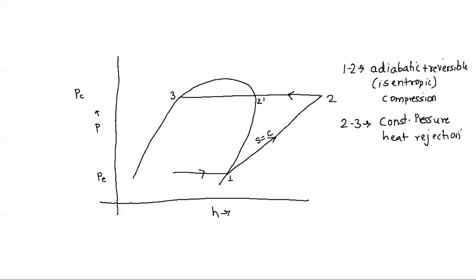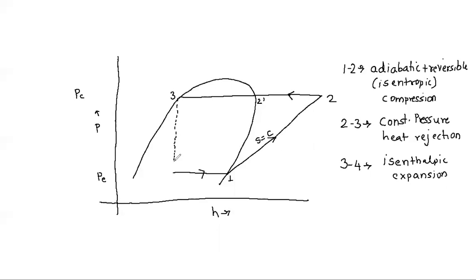After the condenser, the refrigerant goes to the expansion device. Process 3 to 4 is a throttling expansion where enthalpy remains constant — an isenthalpic expansion. This expansion process is irreversible, so it is represented by a dotted vertical line on the p-H diagram. The enthalpy remains constant even though the process is irreversible.